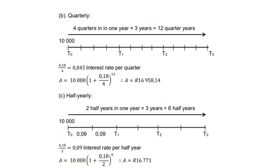For quarterly compounding, remember there are four quarters in one year, so three years gives 12 quarters. The interest rate is also divided by four. Therefore A = 10,000 × (1 + 0.18/4)^12, which equals R16,958.14.